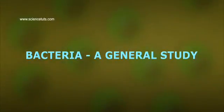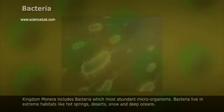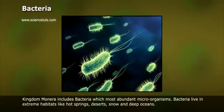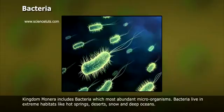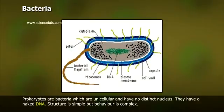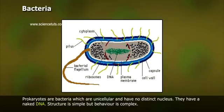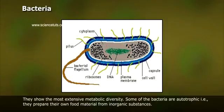Bacteria: a general study. Kingdom Monera includes bacteria, which are the most abundant microorganisms. Bacteria live in extreme habitats like hot springs, deserts, snow, and deep oceans. Prokaryotes are bacteria which are unicellular and have no distinct nucleus. They have naked DNA. Their structure is simple but behaviour is complex.